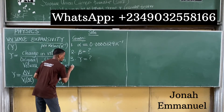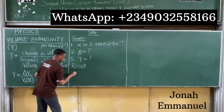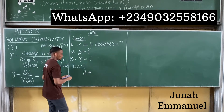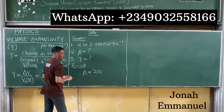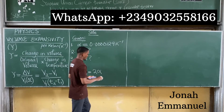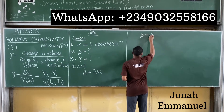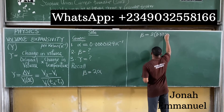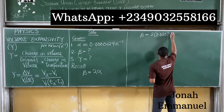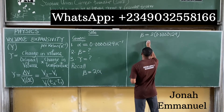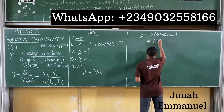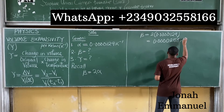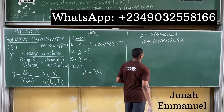First, recall the formula: area expansivity β equals 2 times linear expansivity α. So β equals 2 × 0.0000129, which gives approximately 0.0000258 per Kelvin. That is the value of the area expansivity.